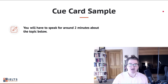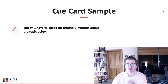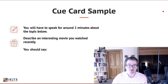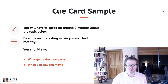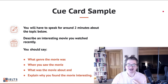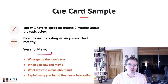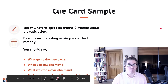Let's have a look at a sample. You'll have to speak for around two minutes about the topic below: 'Describe an interesting movie you watched recently.' You should say what genre the movie was, when you saw the movie, what the movie was about, and explain why you find the movie interesting. So again: main topic at the top, 'you should say,' and four bullet points.